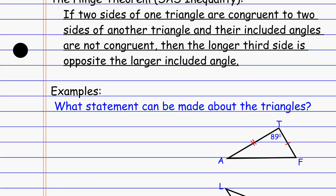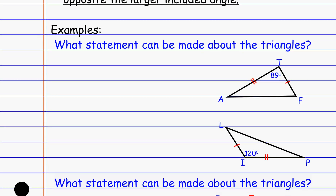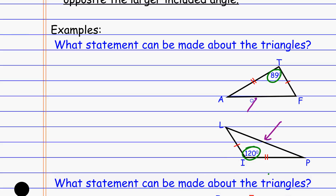For example, it just asks what statement can be made about the triangles. This is the hinge theorem at work. I have two sides that are congruent to one another — these two sides here are congruent, and then these guys are congruent. We're taking two equal pieces and changing the angle, essentially opening up the angle more with one than with the other. Because 120 is bigger than 89, the opposite side LP has to be bigger than the opposite side AF. The statement that can be made is that LP must be greater than AF.